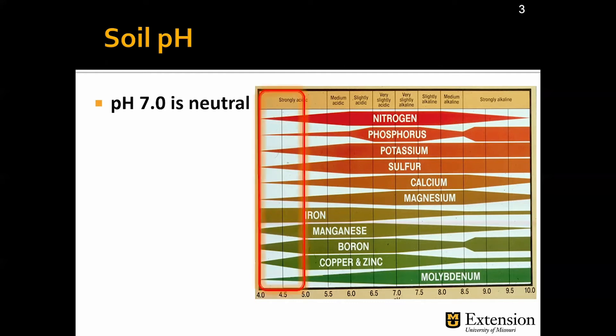If we have, for example, a pH that's very acidic, let's say between 4 and 5, notice that at this pH some elements will not be available for uptake. For example, look at potassium — the bar is very thin and this can lead to deficiencies. Plants will not have enough potassium and crop yields will be affected. On the other hand, look at iron — notice that iron is highly available at this pH and some plants may develop toxicity, also affecting crop yield. So this pH range is not adequate for most crops.